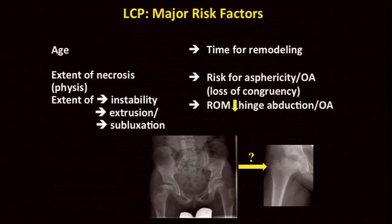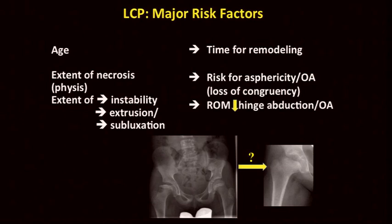The major risk factor is age — this is very clear because the hip needs to remodel, and the time for remodeling is during growth. Once the hip is matured, it's done, and the earlier the Perthes occurs, the more time is left for remodeling. Extent of necrosis is important, and also the involvement of the physis. This is not realized by all people involved in treating Perthes, and it has an impact on the femoral neck, its width, and the position of the greater trochanter. Then we look for instability.